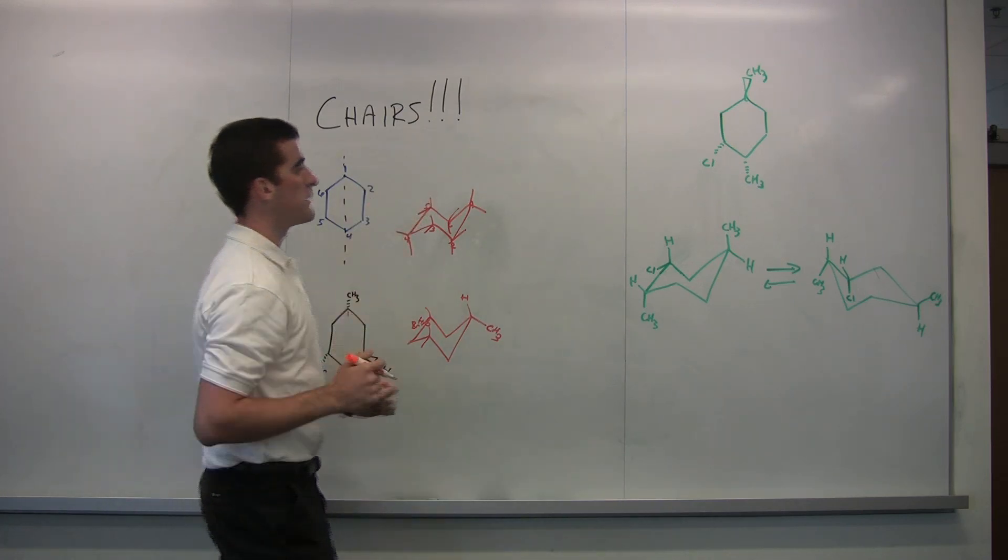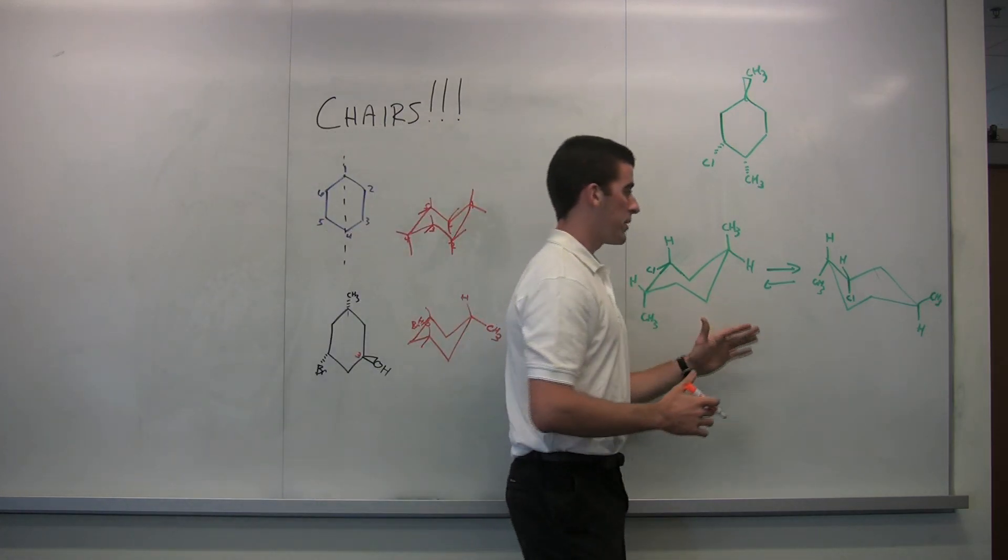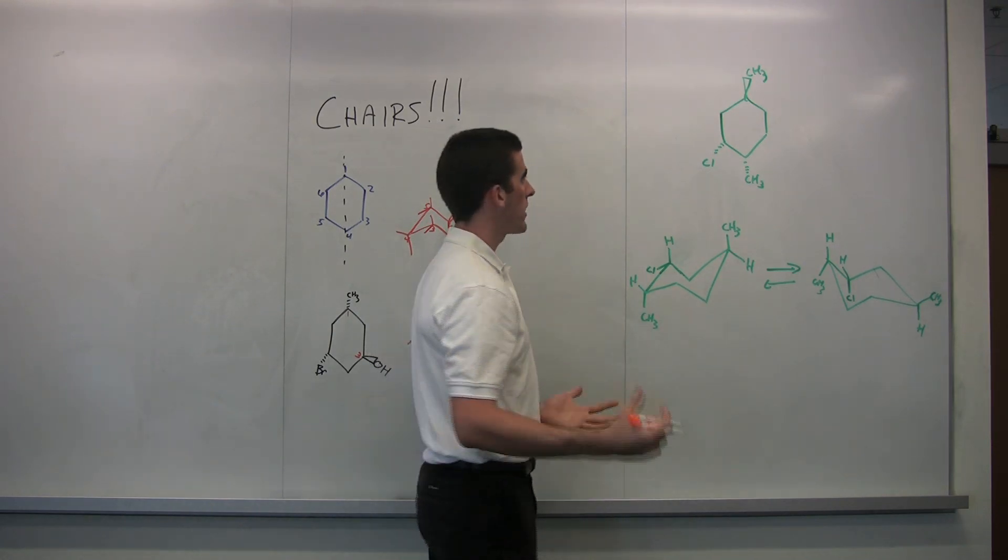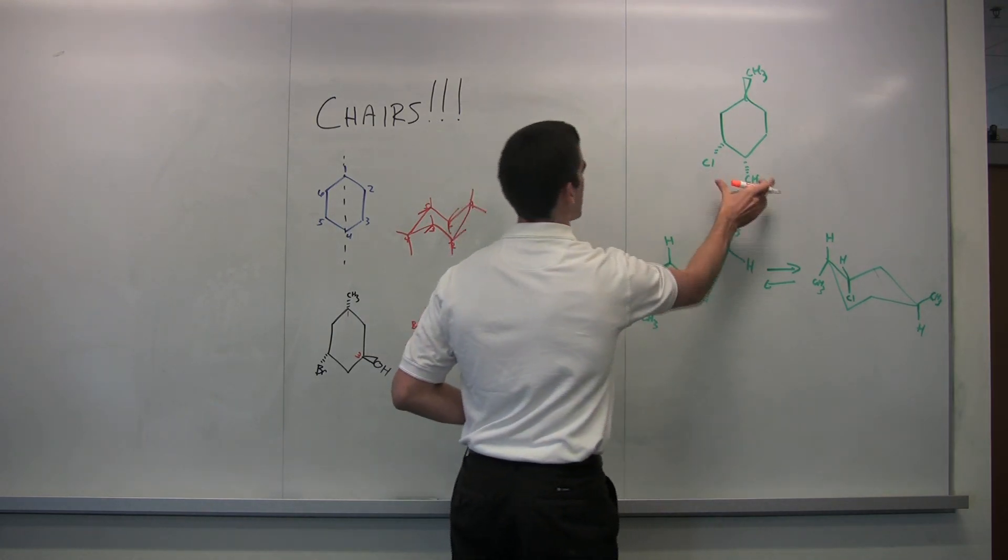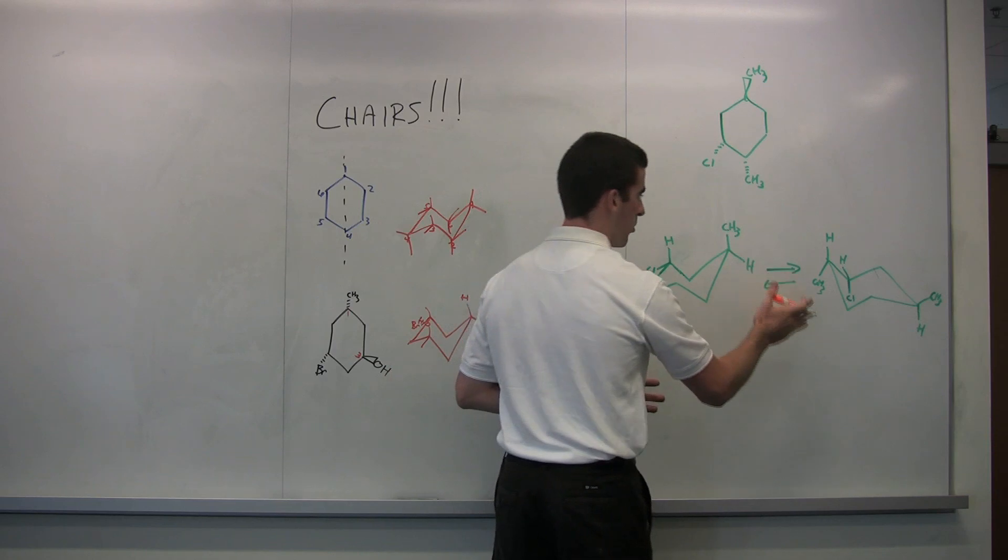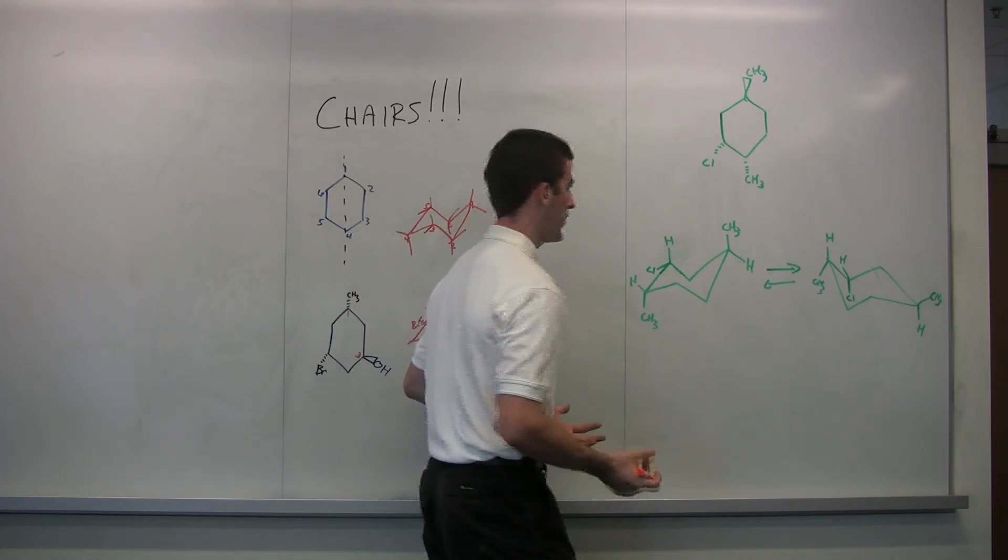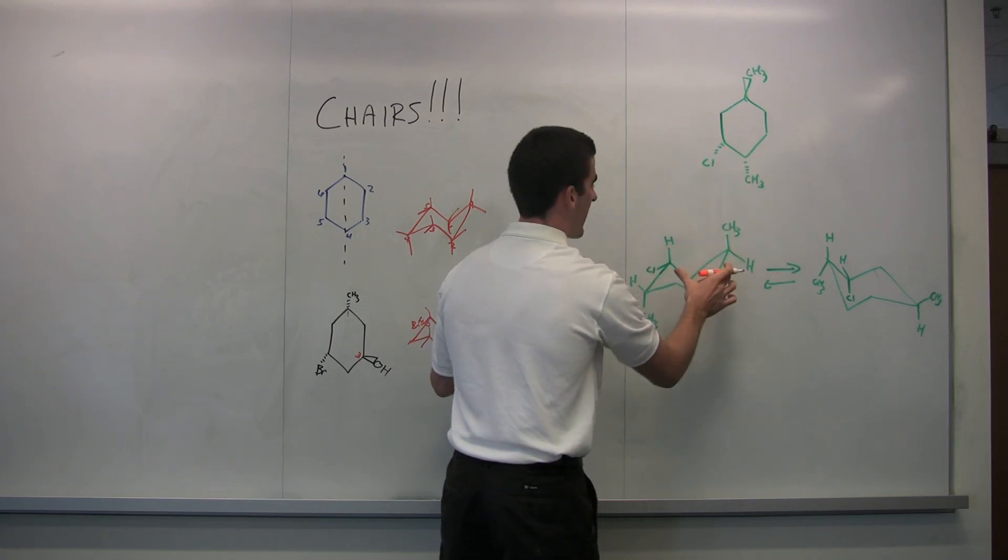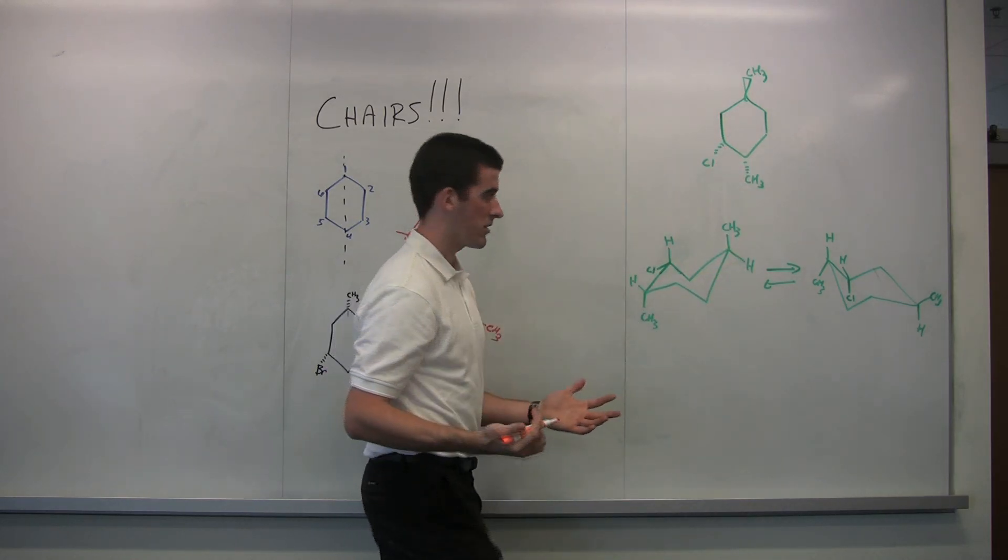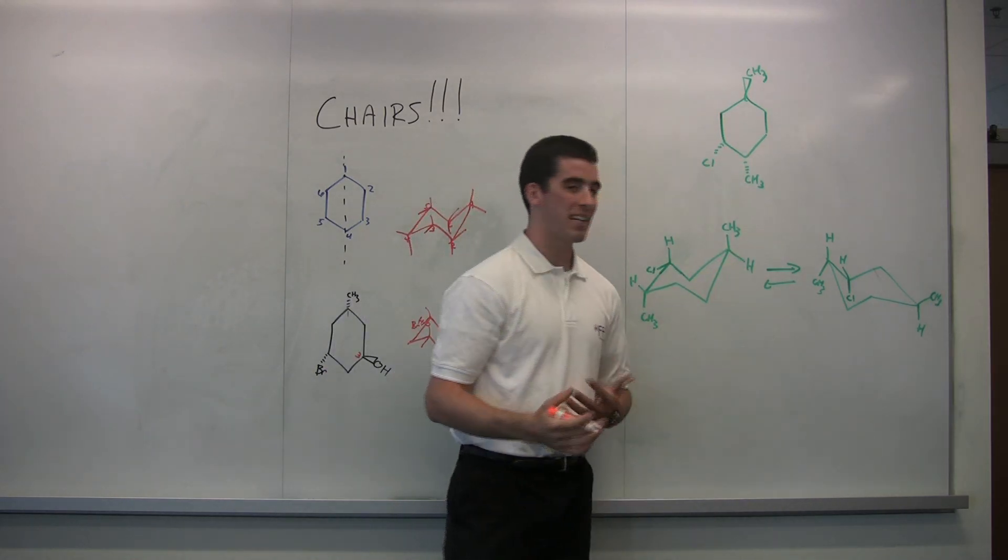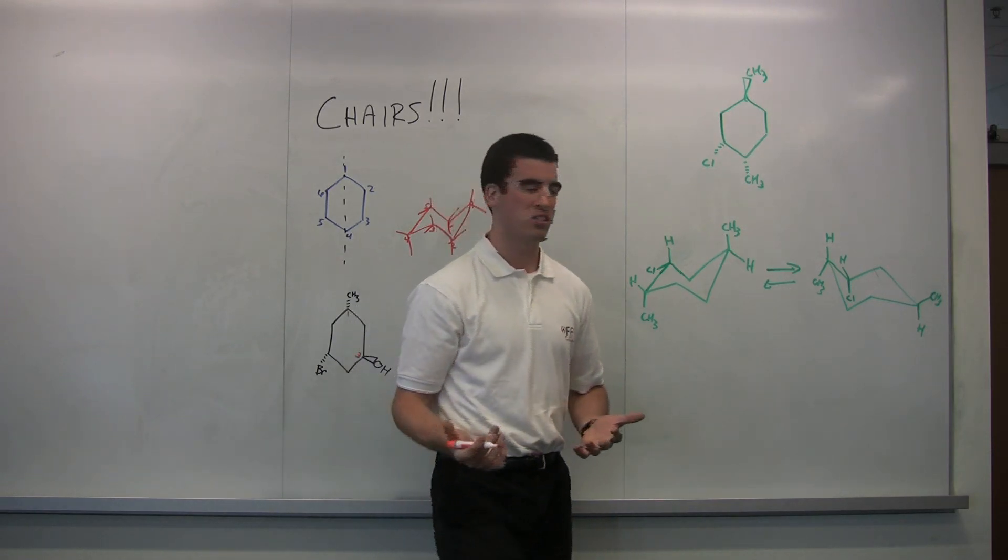So let's move on to our last example here. And then we're going to rank these based on their stability and find the KEQ. So we have this example here. We have three substituents. And I've already written out both conformance. Now again, remember for chairs, there are two conformations that you can be looking at. So again, we have our positions drawn out, only the positions that have substituents. And now we can rank these based on how many equatorial and axial positions there are.